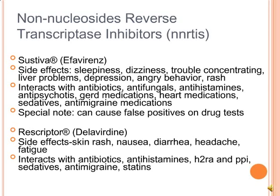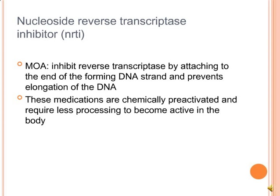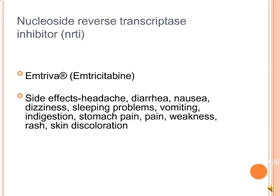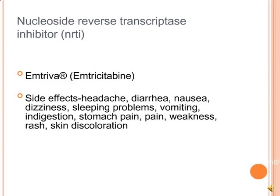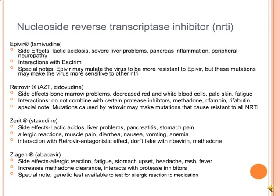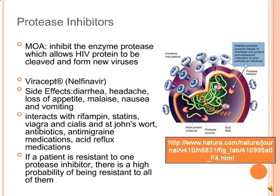Nucleoside reverse transcriptase inhibitors, or NRTIs, inhibit reverse transcriptase by attaching to the end of the forming DNA strand and preventing elongation of DNA. These medications are chemically pre-activated and require less processing to become active in the body. Examples include Viread, Emtriva, Epivir, Retrovir, Zerit, and Ziagen. Side effects to watch out for include lactic acidosis, liver problems, allergic reactions, and stomach pain.